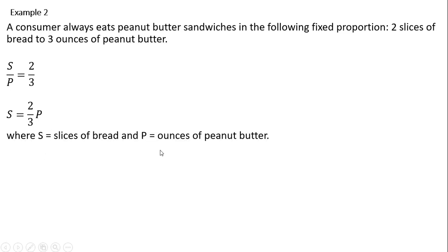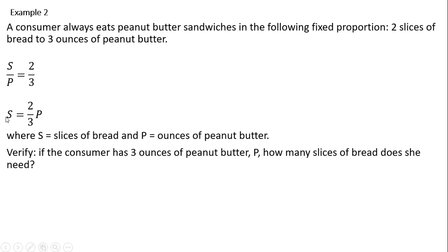We can verify this result is correct by substituting some numbers in here. So if the consumer has three ounces of peanut butter, P, how many slices of bread does she need? So putting in three for P, she'd need two slices of bread. And that's exactly how this word problem is written.